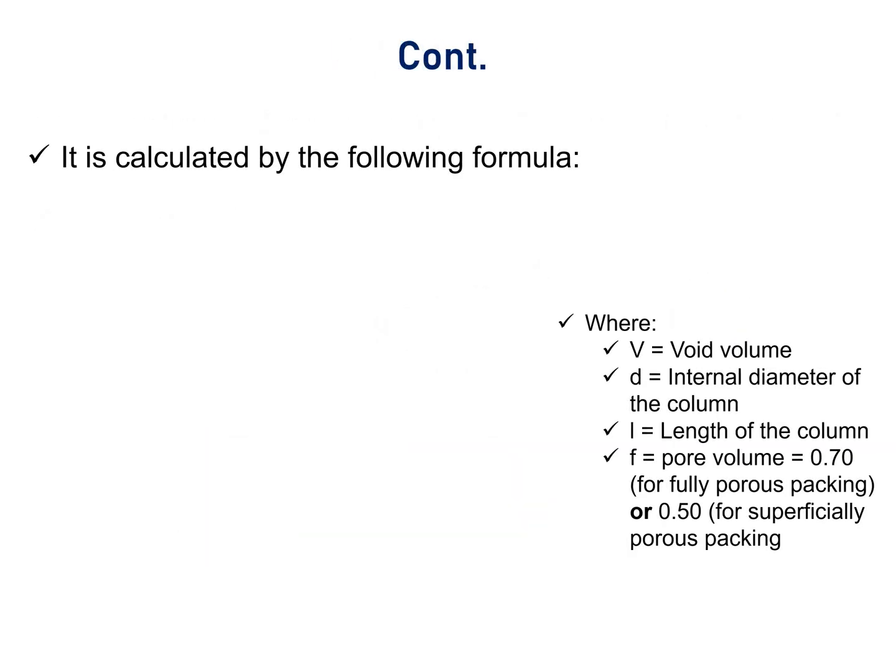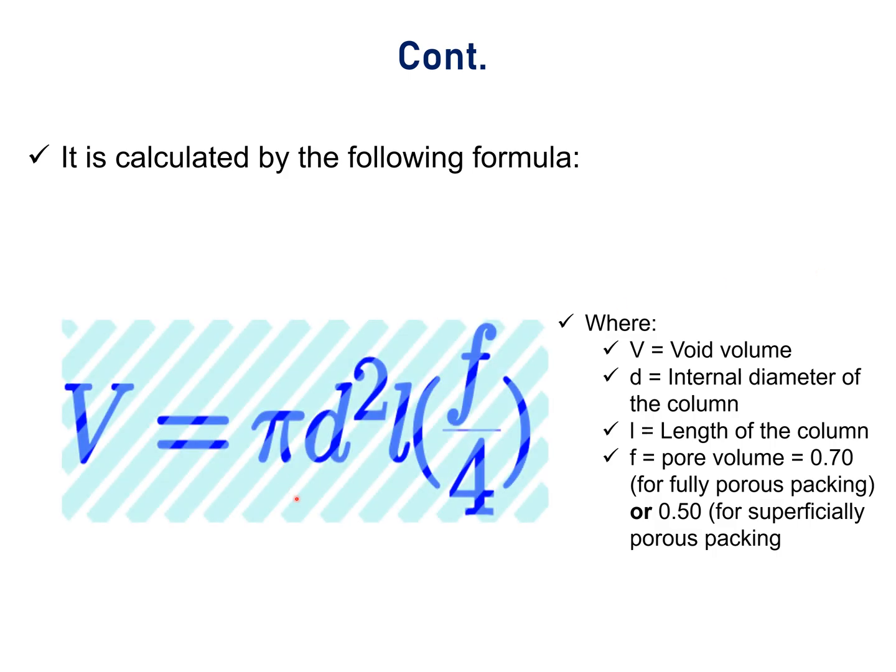Void volume is calculated by the formula V equals pi d squared l f divided by 4, where d is the internal diameter of the HPLC column, l is the length of the HPLC column, f is the pore volume. Its value is 0.70 for fully porous packing column and 0.50 for superficially porous packing column. Pi is well known.